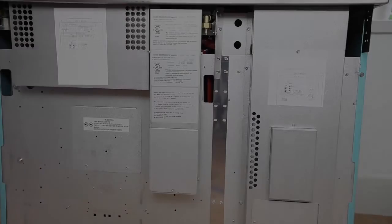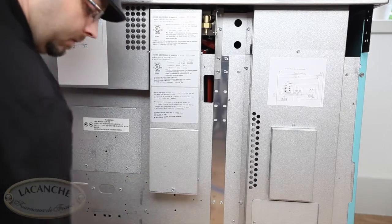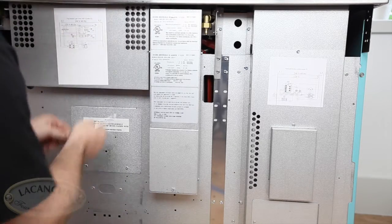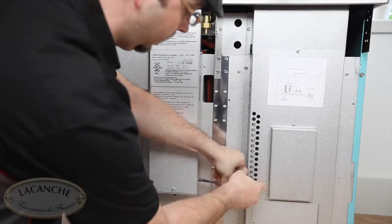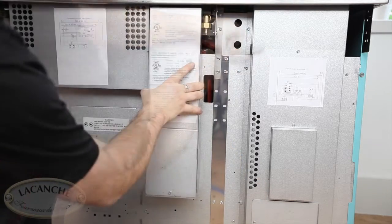Move the range from the wall to gain access to the electrical panel. Remove the electrical panel cover by removing the four 7mm hex head screws.